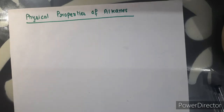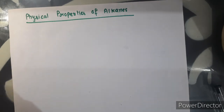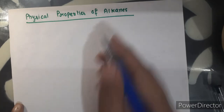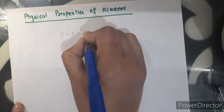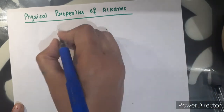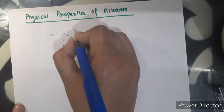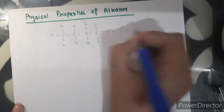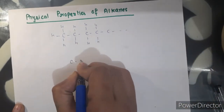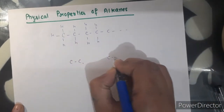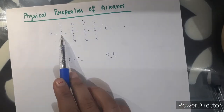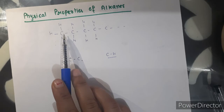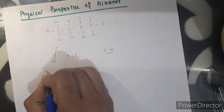First, the physical properties of alkane. Physical properties like melting point, boiling point, density, and solubility depend upon the intermolecular forces of interaction. In alkane, carbon-carbon single bonds are present and carbon forms a single bond with hydrogen. There is very little difference in electronegativity value between carbon and hydrogen, so alkanes are non-polar by nature.